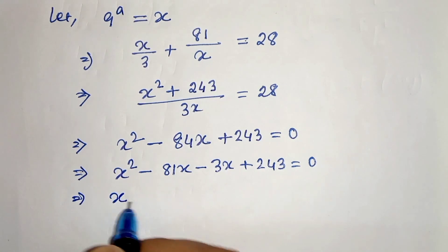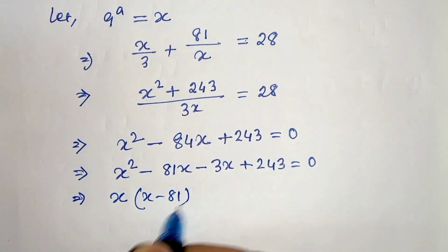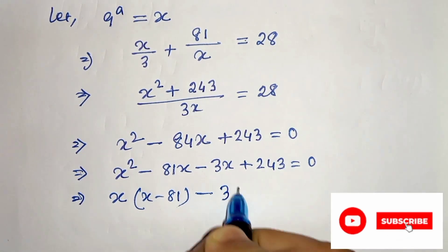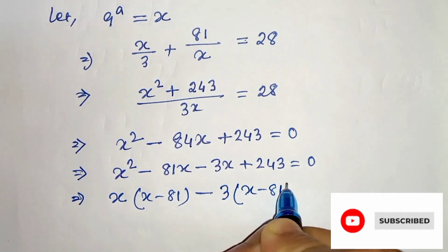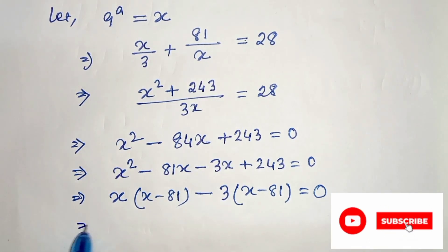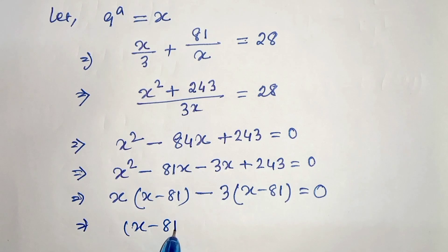In the next step we will take common x, so it will be x minus 81, and from here we will take 3, so it will be x minus 81 equals 0. Now we can take common x minus 81, so it will be x minus 3 equals 0.